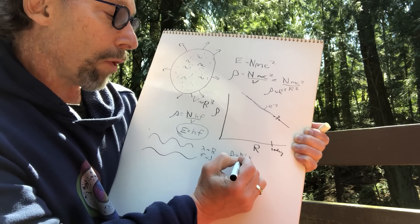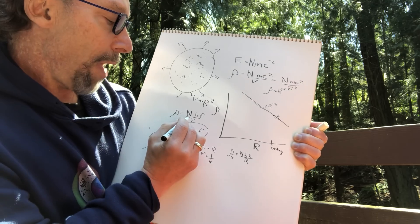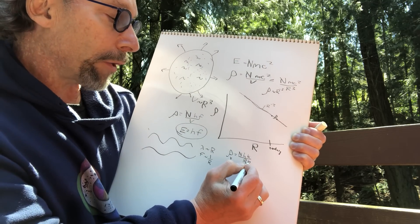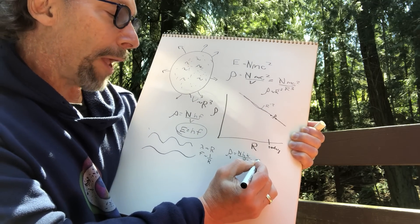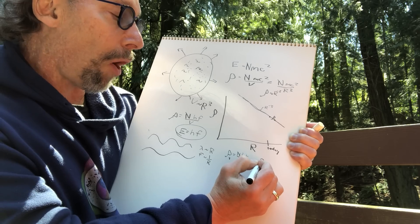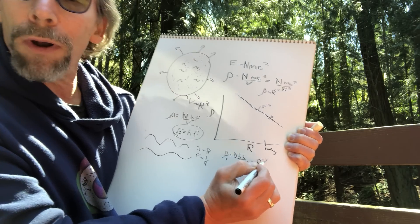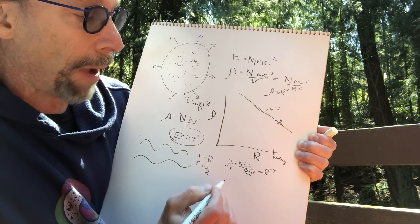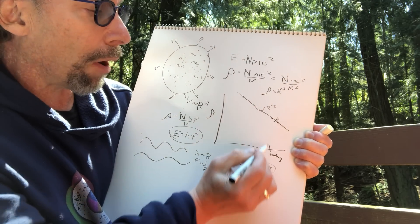If you look at this, the energy density of photons is the number of photons times h, and then the frequency is some number k over r, and then over the volume, which is r cubed. So the energy density of radiation goes down as r to the minus 4 power—one extra power of r.